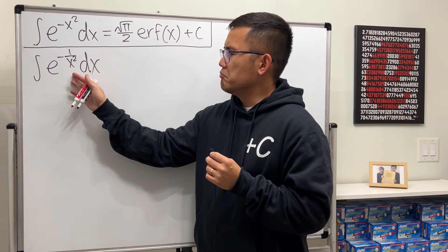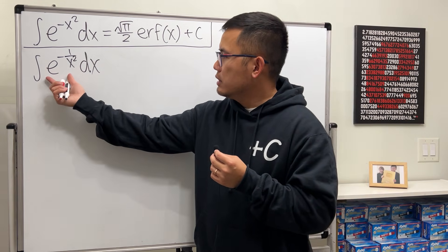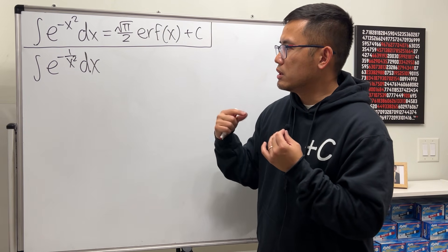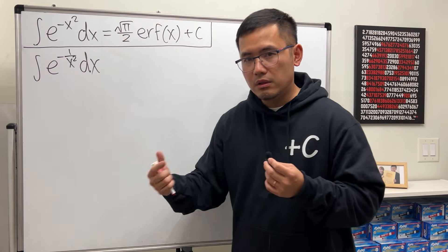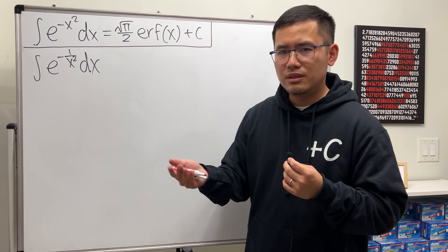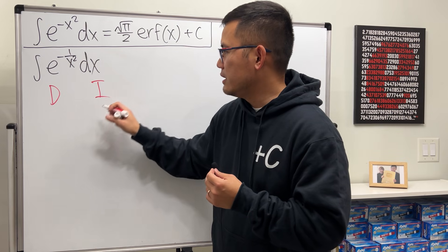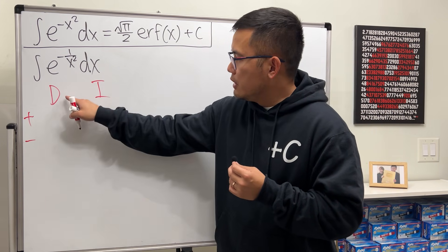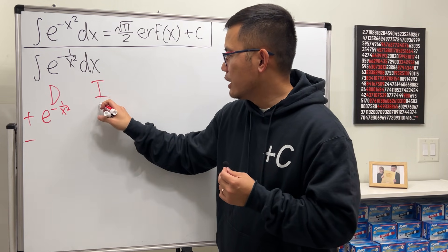Can we do a u-sub first? Maybe. But here's how I did it. Notice we are trying to integrate this but we cannot. So let's try to differentiate it first. If you want to differentiate one part of the integral, then you have to integrate the other — that's integration by parts. Let's use the DI method. Put down D and I, plus and minus on the side. Differentiating: e to the negative 1 over x squared. Integrating: 1.